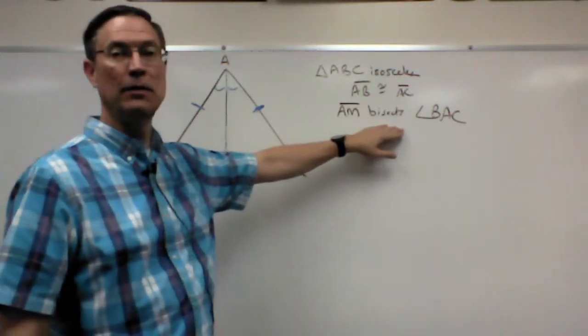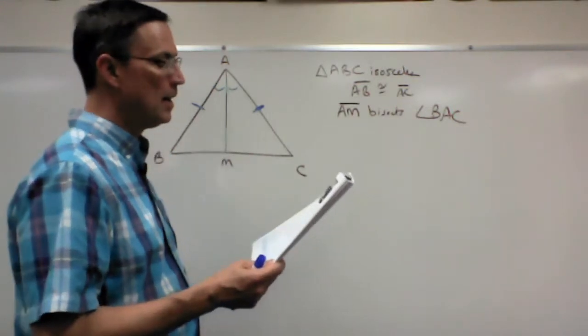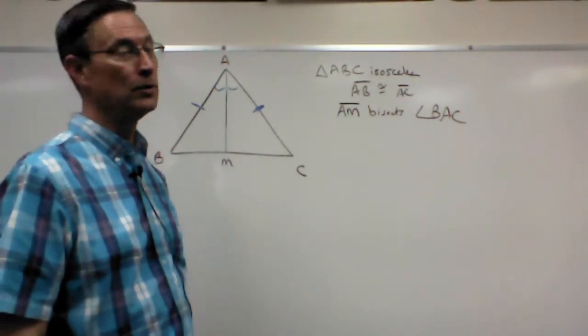Okay, right here it is. Definition of angle bisector. Now number three, oh, there's an easy one. They give you the step. So this is easy.